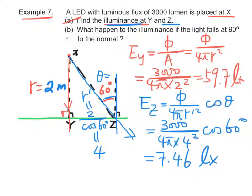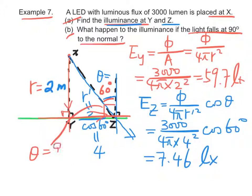For part B: If the light falls at 90 degrees to the normal, that means θ equals 90 degrees. In this case, the illuminance will be equal to 0 because cos 90 degrees equals 0.